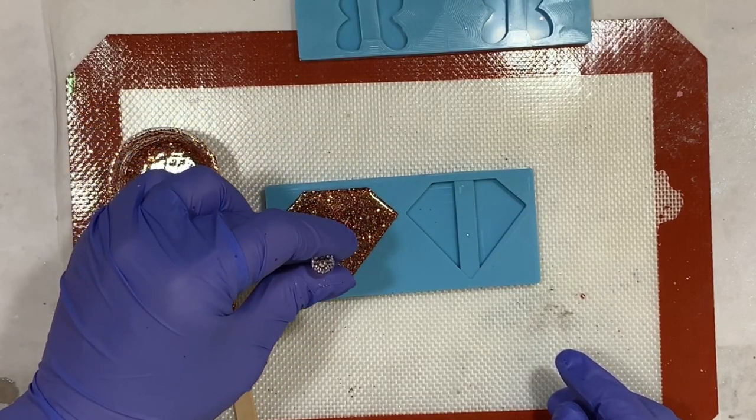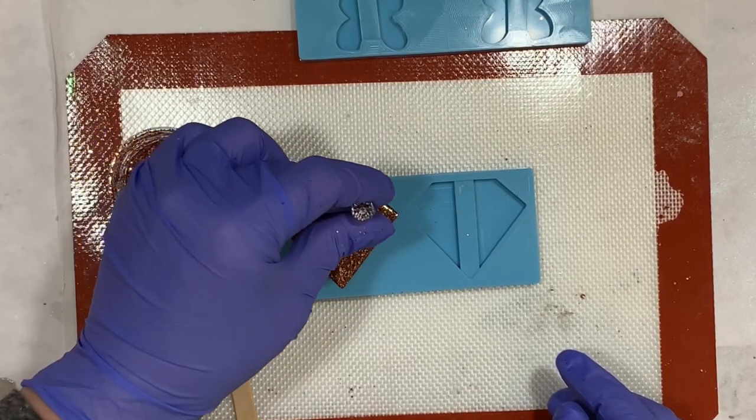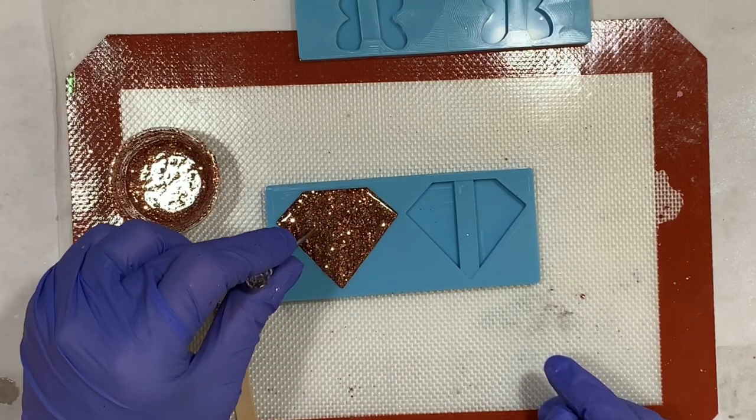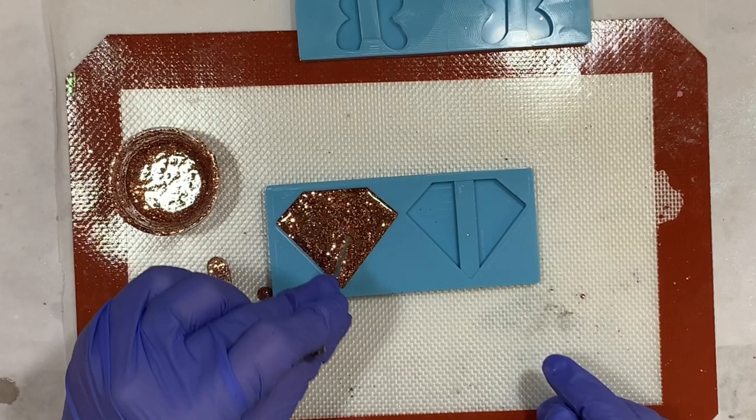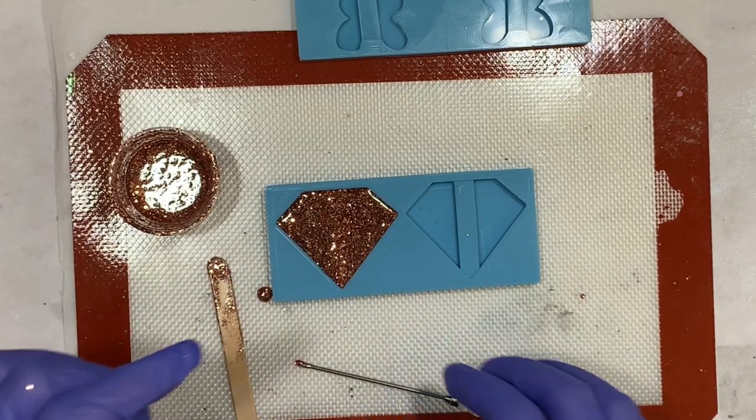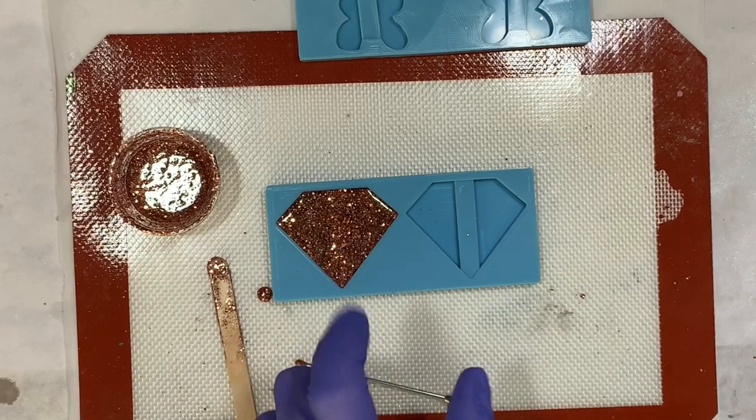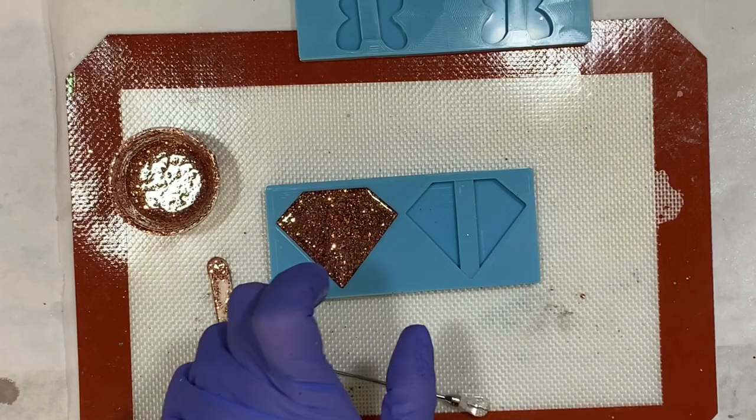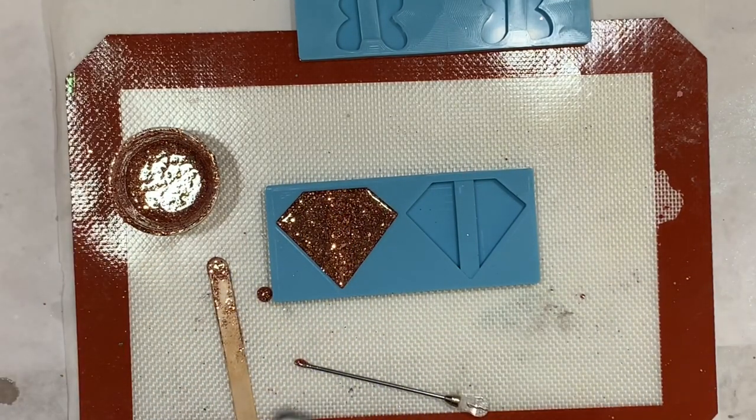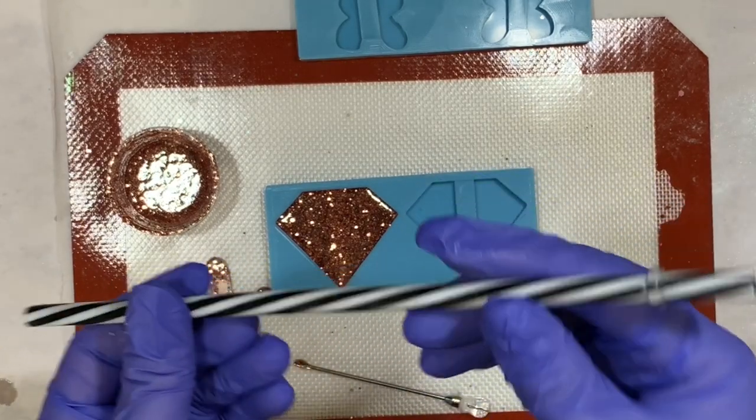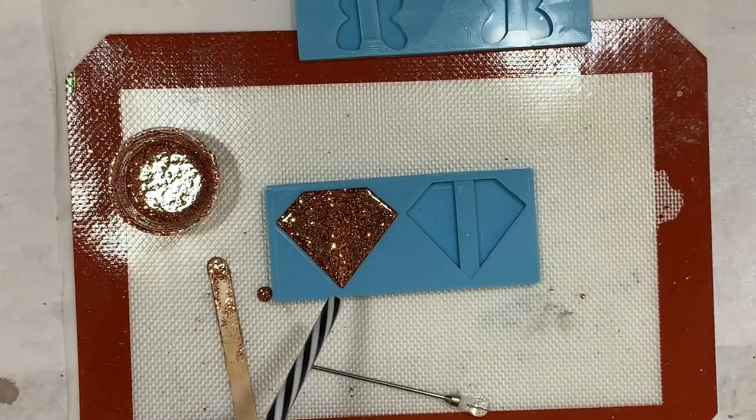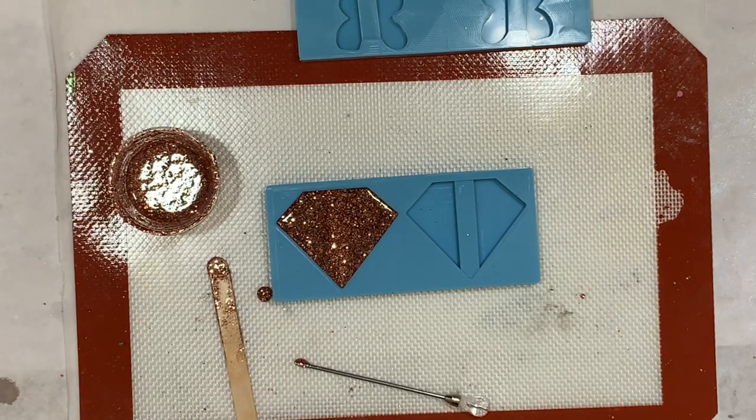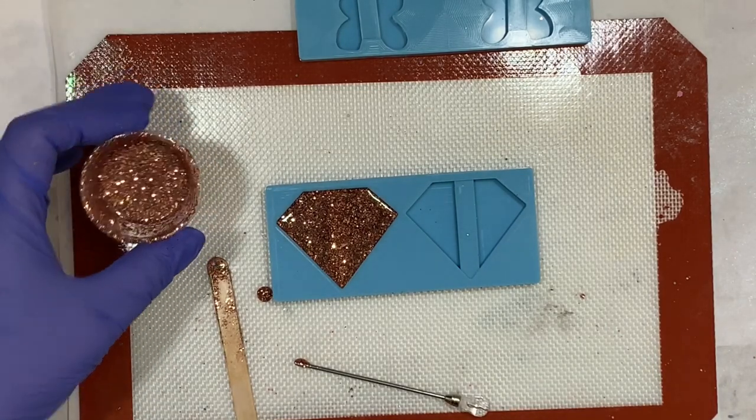Now keep in mind these molds I do not recommend taking heat to - you can melt the mold and then it will be ruined. What I like to do to get rid of air bubbles in these is spritz some alcohol on there. I don't have any up here with me right now, but you can get a little spritz bottle, spritz some alcohol, let the bubbles rise. I also like to take a straw and just blow some air on there. That's another way you can get air bubbles out as well.